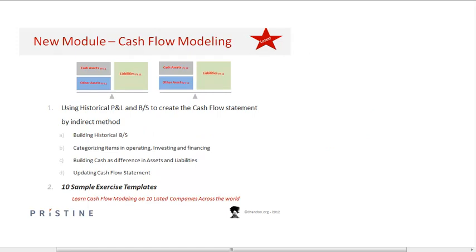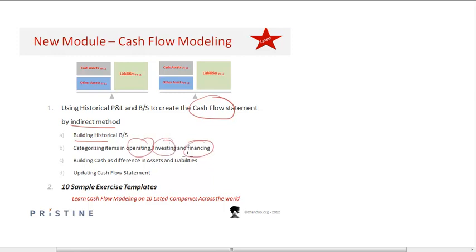We are also introducing a new module on cash flow modeling where we use the historical P&L and balance sheet to create the cash flow statement through the indirect method. We build the historical balance sheet and then categorize items into operating, investing, and financing activities.